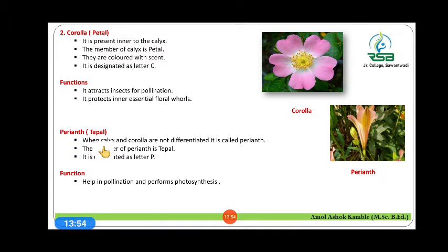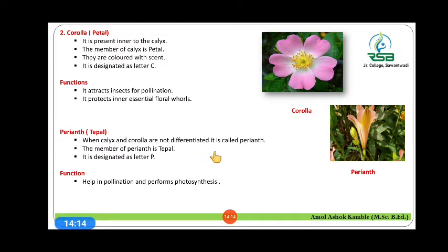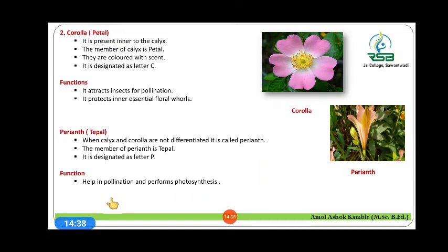Then about the perianth, also called tepal. The member of perianth is tepal. When the calyx and corolla are not differentiated from each other in a flower, then that whorl is called perianth. So it is all about the accessory or non-essential floral whorls: calyx, corolla, and perianth.